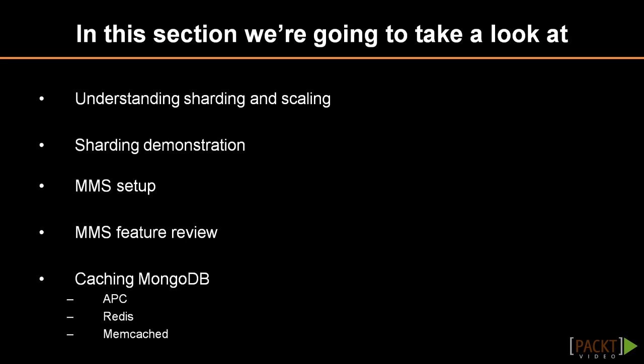This section looks at several advanced topics in MongoDB. It begins with a review of sharding for large-scale applications, then turns to the Mongo Monitoring Service, or MMS, which can be used to deploy, monitor, upgrade, and backup MongoDB installations. The section finishes with a review of caching techniques to make MongoDB even faster and more scalable.